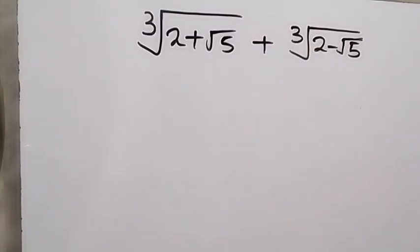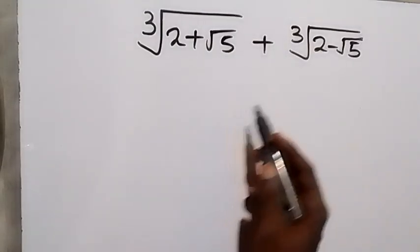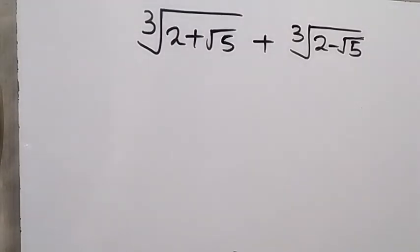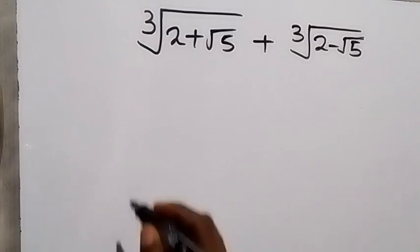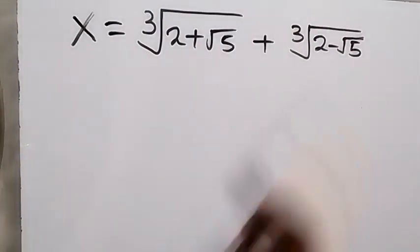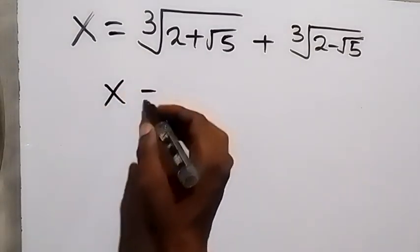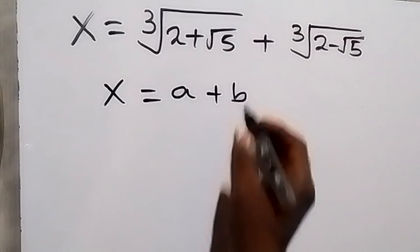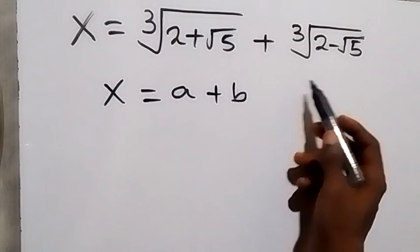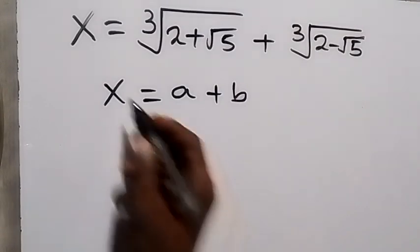Hello, you are welcome. We are simplifying the cube root of (2 + √5) plus the cube root of (2 − √5). To make our work easier, let's represent this as x, so x equals a plus b, where a is the cube root of (2 + √5) and b is the cube root of (2 − √5).